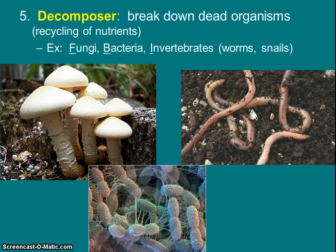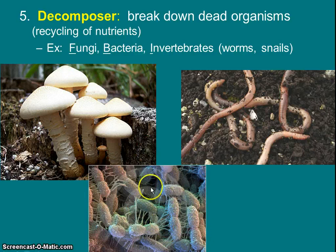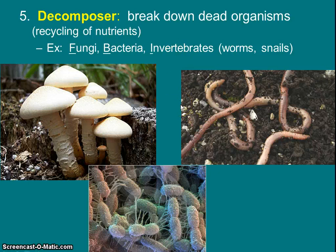Under Roman numeral two, the last type of heterotroph is a decomposer. Decomposers break down dead organisms and matter and recycle nutrients. There are three major groups that do this: fungi, bacteria, and invertebrates like worms and snails. A lot of students remember these three groups by the acronym FBI — Fungi, Bacteria, Invertebrates. Without these creatures, all the nutrients would be trapped in dead organisms and would never get cycled back into the ecosystem, so we really rely on them for nutrients to return to the food chain or web.